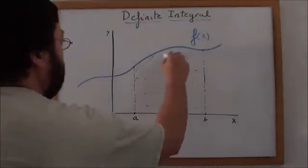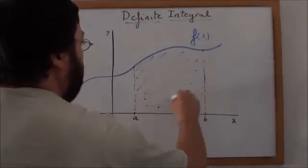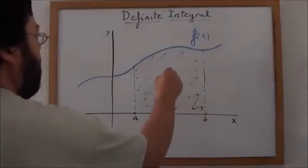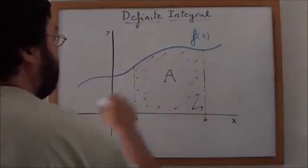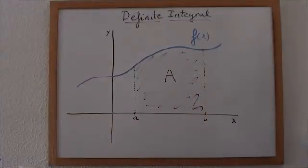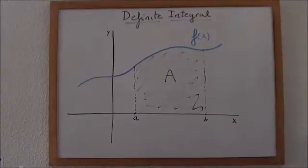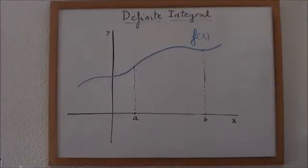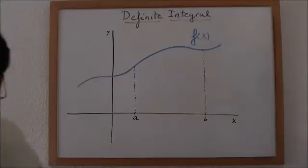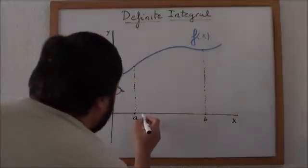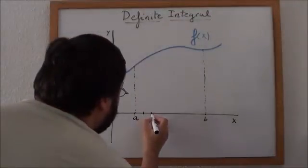So when finding a method to calculate this area is when the definite integral comes up. A way to find that area could be to divide the segment a, b in a number of smaller segments.